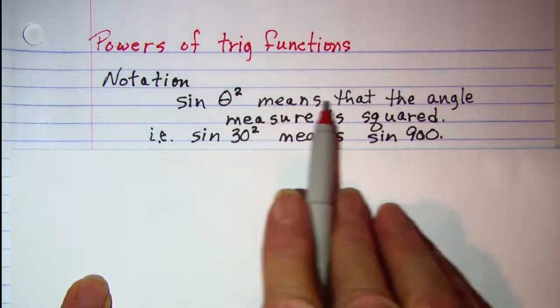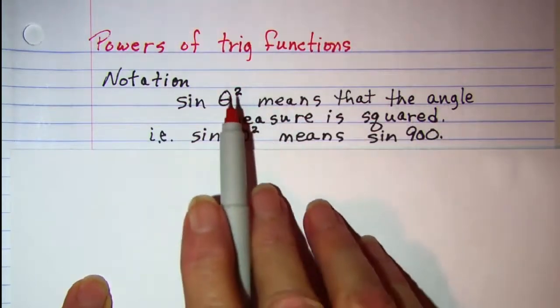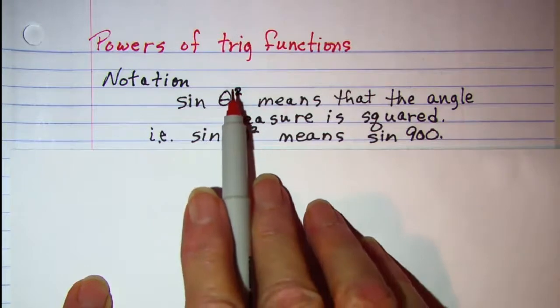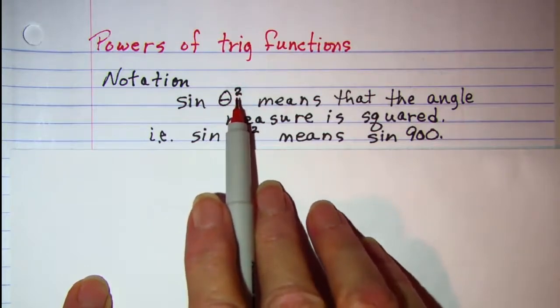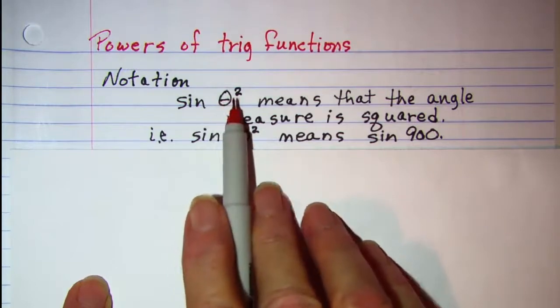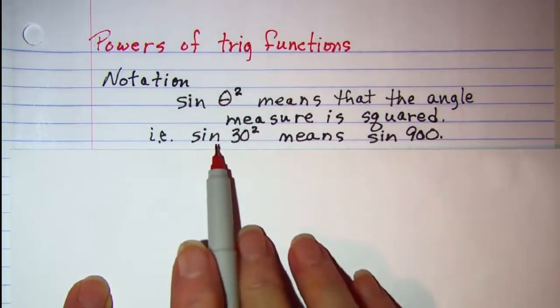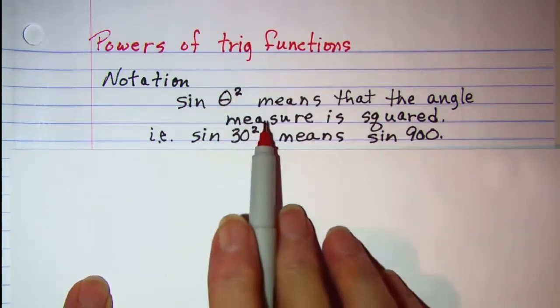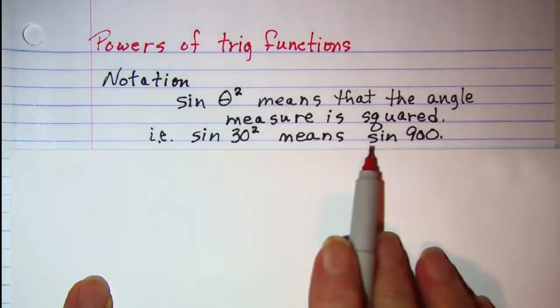This would mean that the angle measure is squared because remember that an exponent applies to what directly is next to it. In other words, sin 30² would mean the sine of 900.